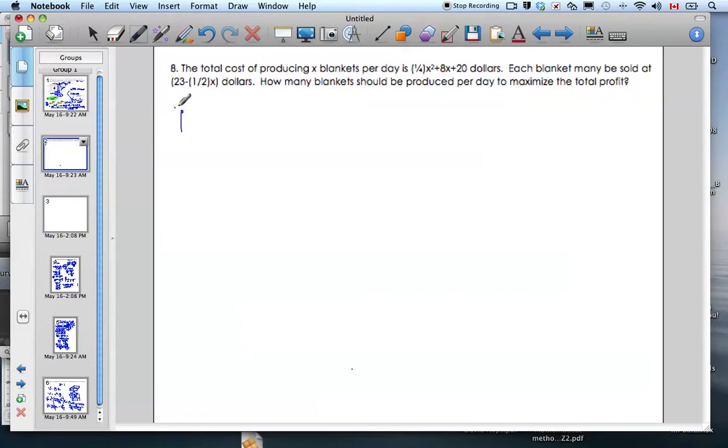Well, if I'm looking for profit, we'll make profit a function of X. It's going to be the revenue, which is the amount of money that comes into the company, minus the total costs. Revenue is simply one-half X—that's for each blanket sold times how many blankets, which tells me how much money is coming in altogether—minus the cost function, which is a quarter X squared plus 8X plus 20.